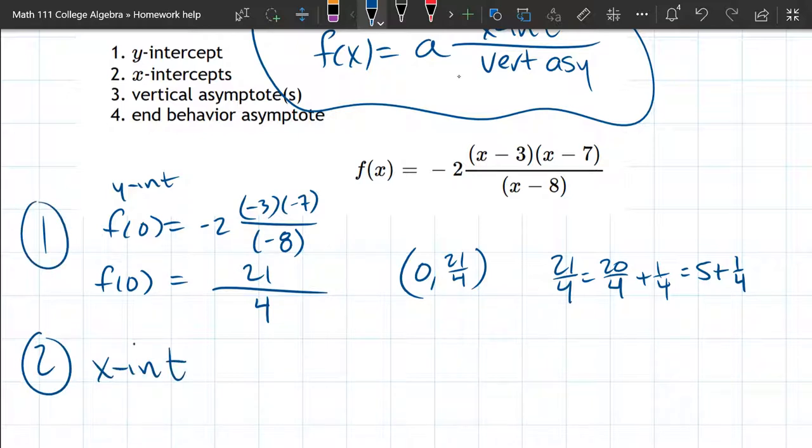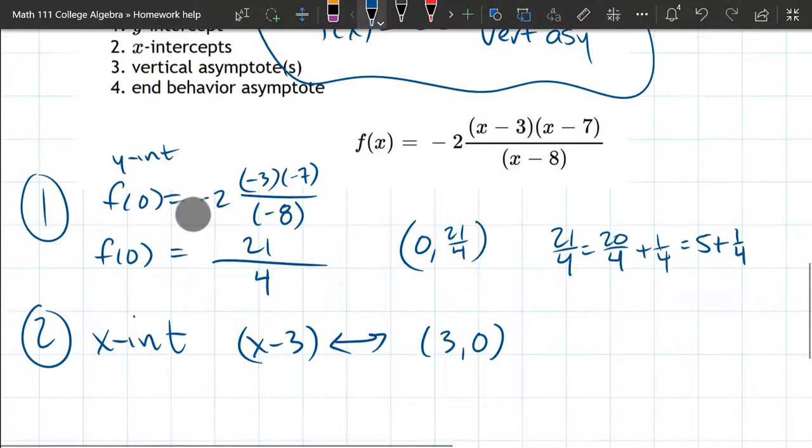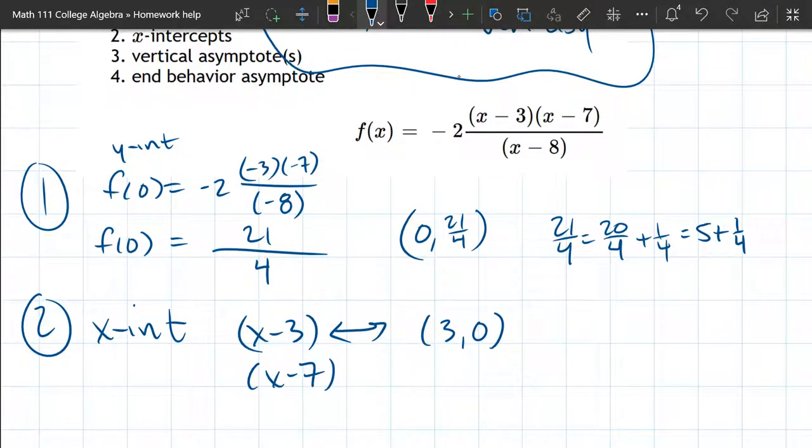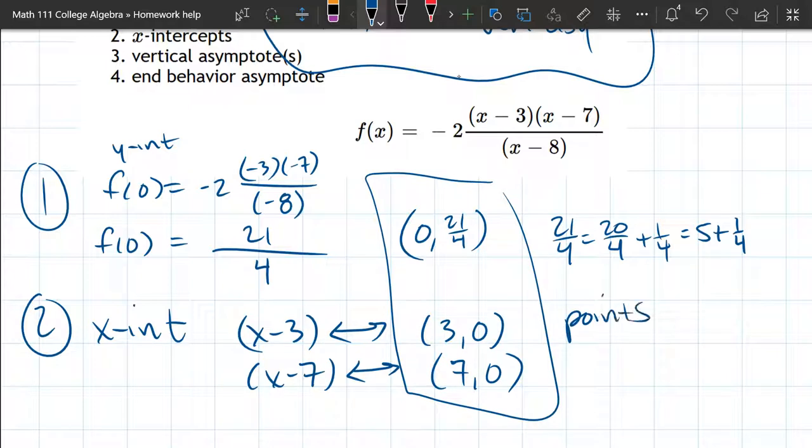X-intercepts. So we have, what makes x minus three zero? Not x equals zero, but x equals three. If I put a three in here, that'll turn into zero. So I'll write x minus three corresponds to three zero. X minus seven corresponds to seven zero. So those are the two x-intercept points. And remember, all three of these are points. So they're gonna show up on the graph as points wherever they happen to go. We'll graph them carefully.